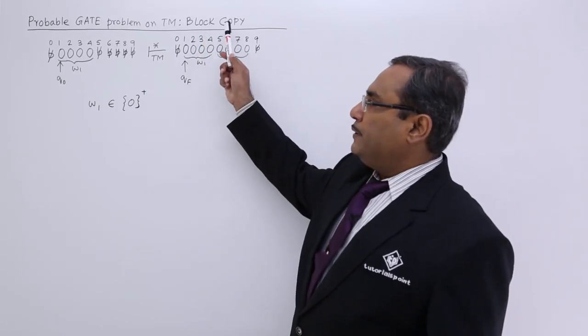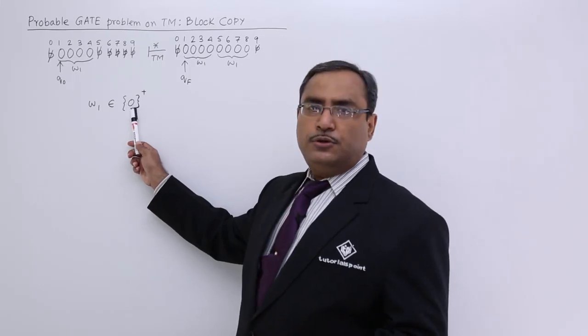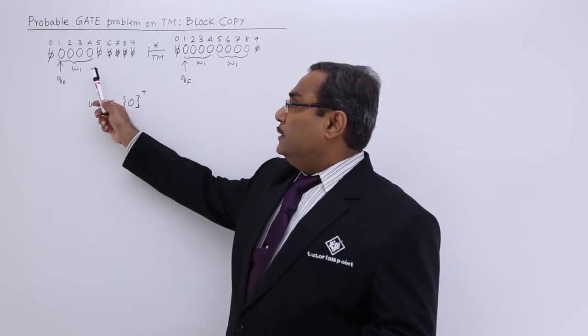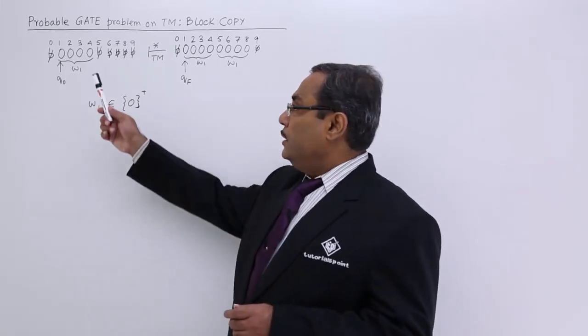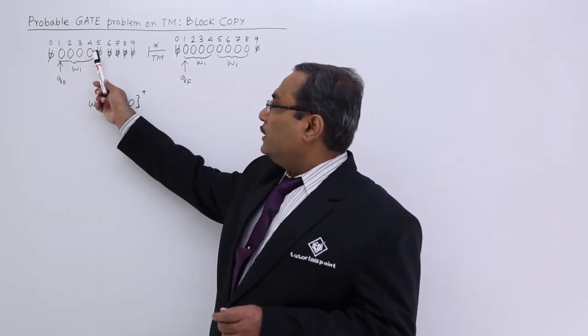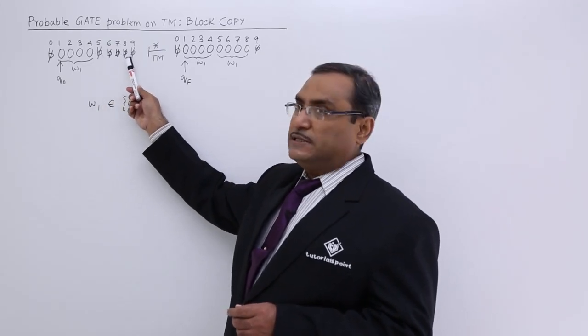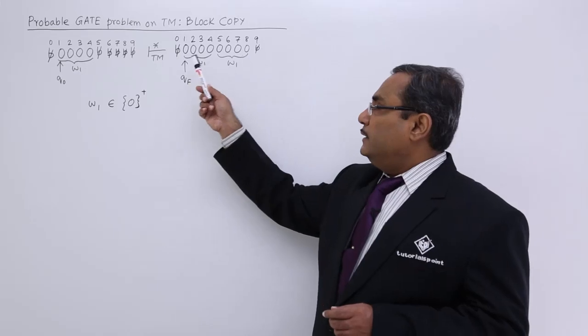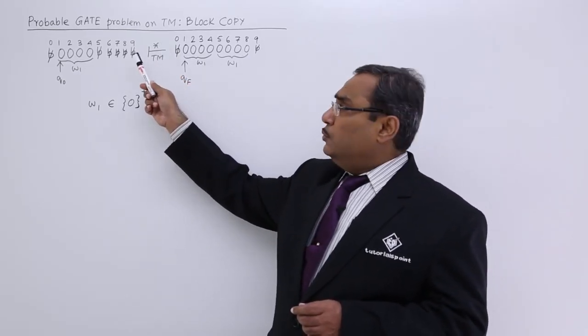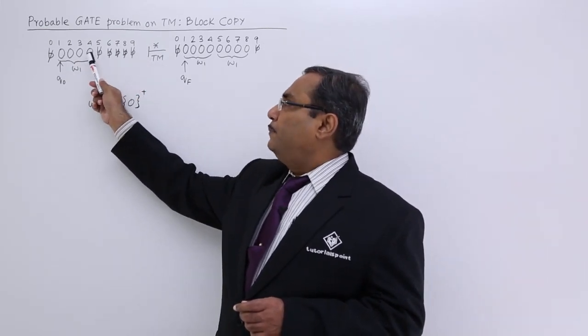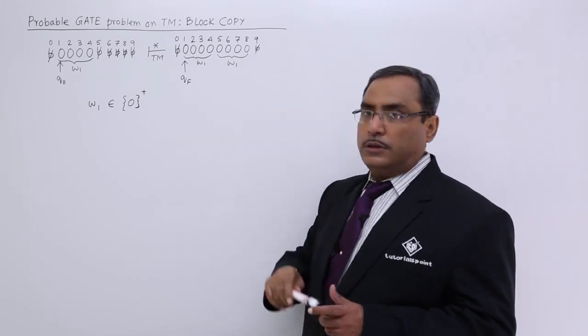This problem is on block copy. Let us suppose there is a string consisting of zeros only. Here I have taken 4 zeros, but it can be 3 or 5 also, no issues. These particular zeros are to be copied in the adjacent 4 blank spaces like this one. That means after multiple transitions following the Turing machine, we shall copy this particular block to the next adjacent places. In this way it will work.